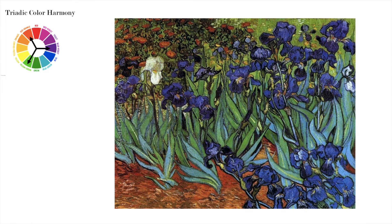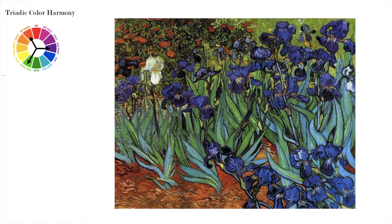Triadic — this is another one that's very strong. Here we have red-orange, blue-violet, and yellow-green. Very strong color palette, and this is another Van Gogh work, one of his irises paintings — super effective color harmony. You can also see that Superman, and a lot of superheroes, use triadic color harmonies. Red, blue, and yellow are the Superman colors — it's another bold, strong color harmony.